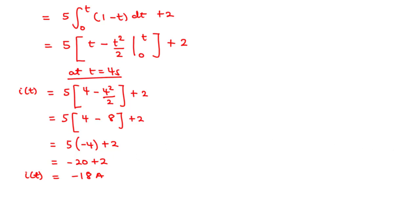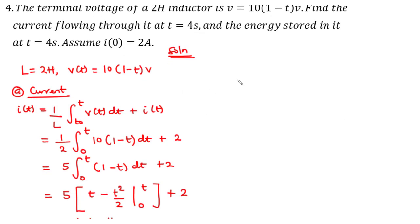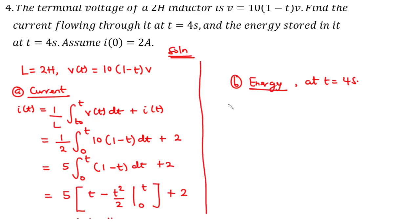Now for part b, we want to find the energy stored at t equals 4 seconds. The energy w equals one half times L times i squared, evaluated from 0 to 4. So we have one half times L, where L is 2.